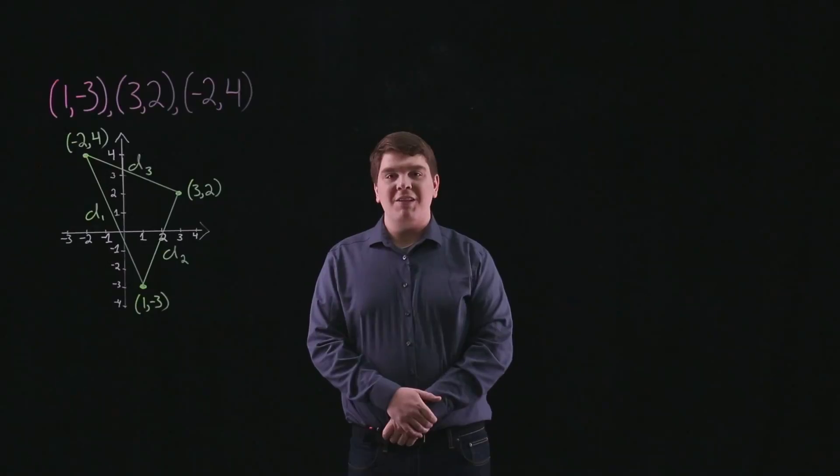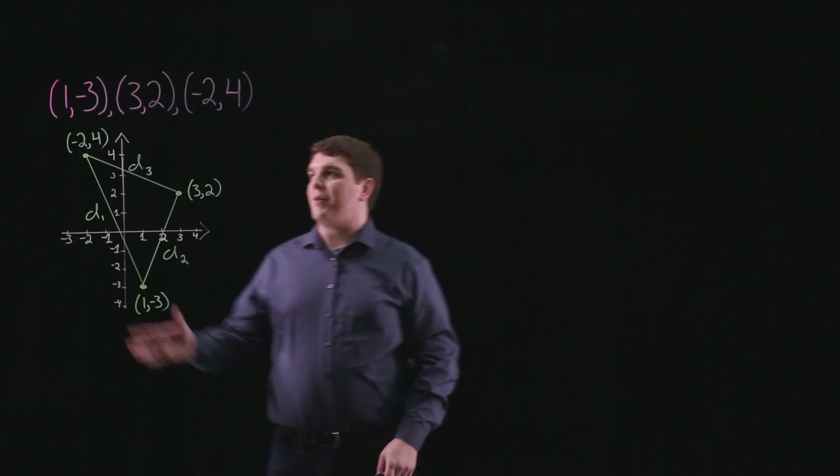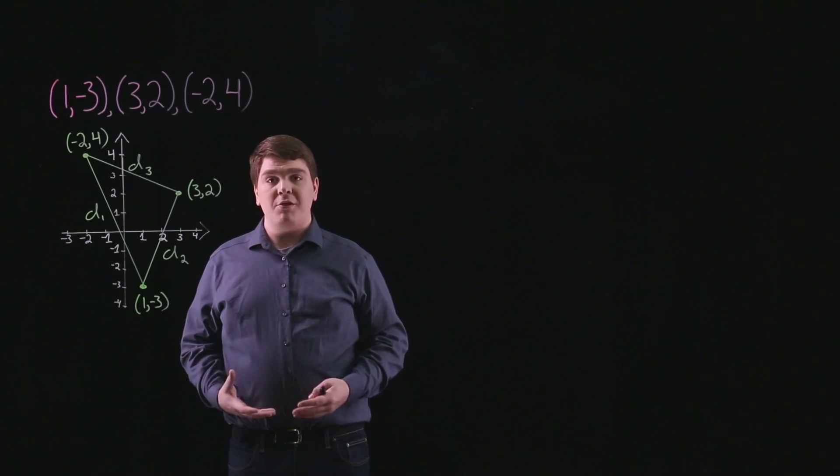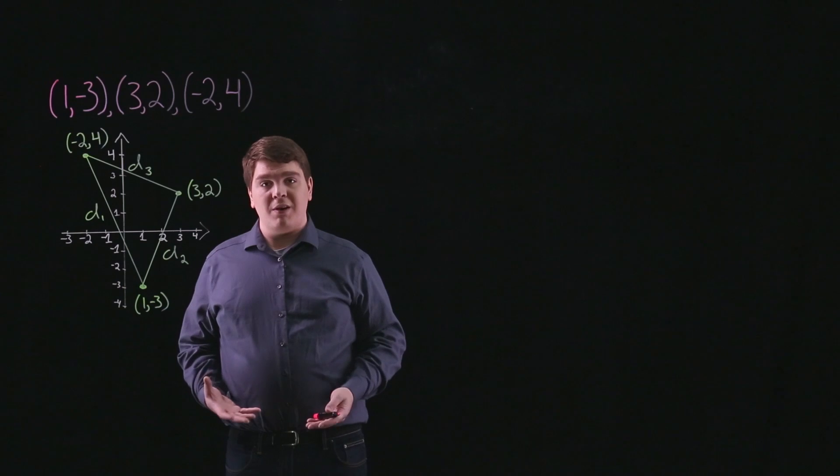Hi, my name is Gabe. For this problem, we are asked to show that the points (1, -3), (3, 2), and (-2, 4) form the vertices of an isosceles triangle.